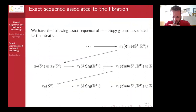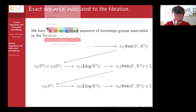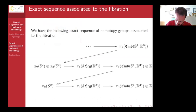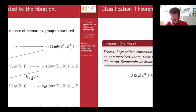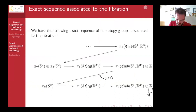From the exact sequence, we recover the well-known result that formal Legendrian embeddings are classified by their topological type as parametrized knots, their rotation number, and their Thurston–Bennequin number. These are encoded in the rotation number and Thurston–Bennequin invariant appearing in the sequence.